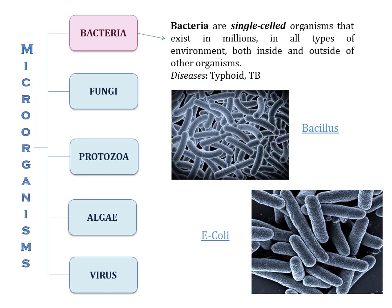The first group is bacteria. Bacteria are single-celled organisms that exist in millions in all types of environments, both inside and outside of other organisms. For example, Bacillus is a bacteria that lives outside — that is, in soil and water — and E. coli is a bacteria that lives inside the intestines of humans. Some diseases caused by bacteria are typhoid and tuberculosis.